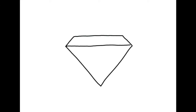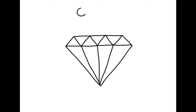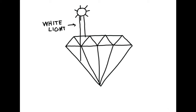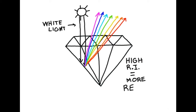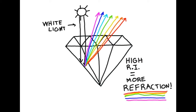When white light enters a gemstone, it will refract into multiple colors. This is called refraction or dispersion in a gemstone. The higher the refractive index, the more colors you'll see.